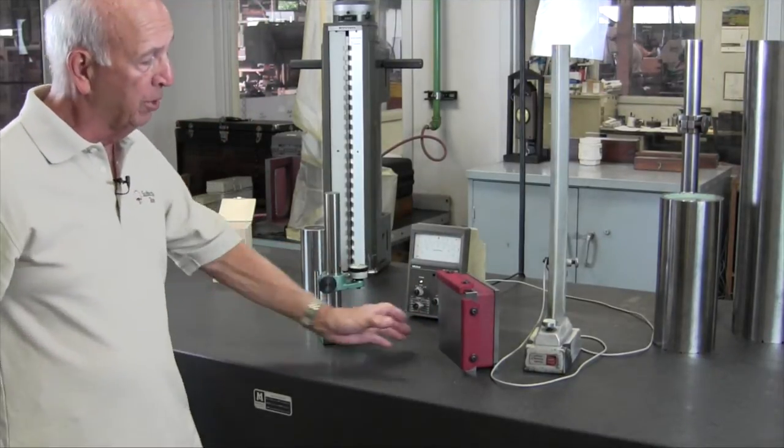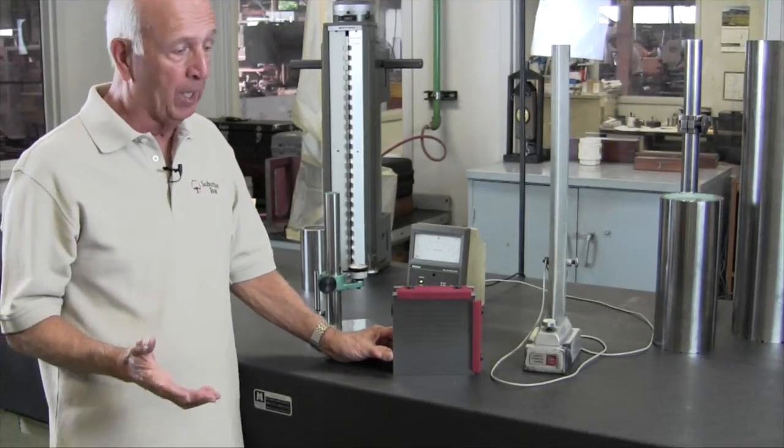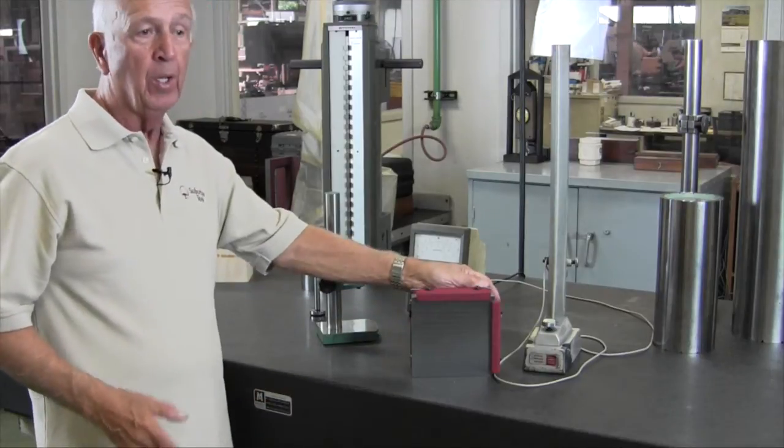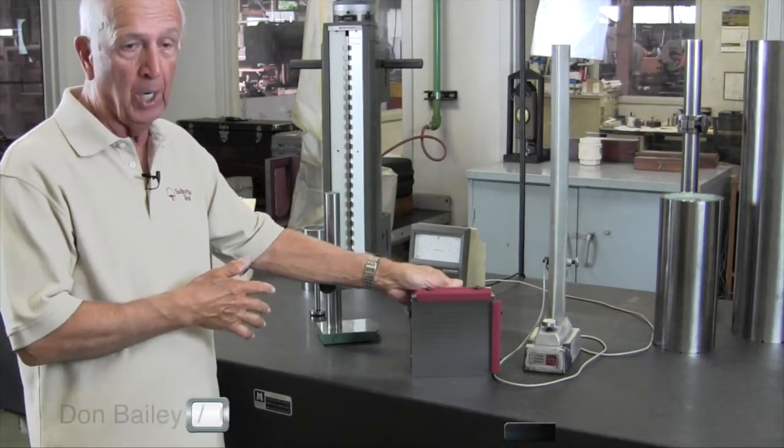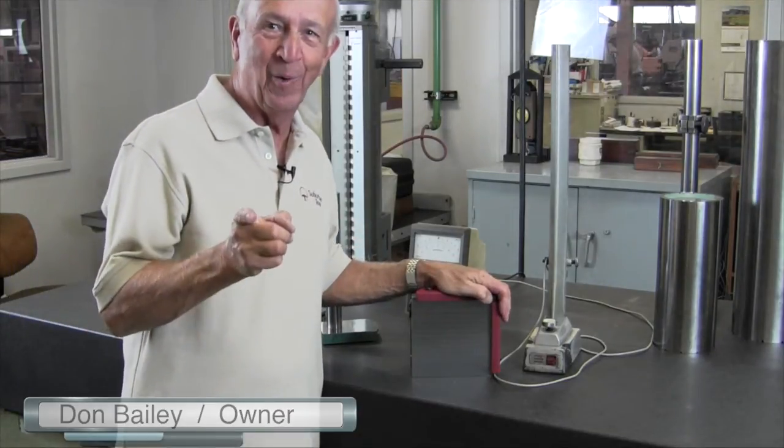This is a tool that you can use on the surface grinder or for inspection to make sure that the part that you're checking is square and parallel. It's a great tool for that purpose. You don't have to use clamps, turn the chuck on, turn the chuck off. Just another one of our tips of the trade. Thanks for watching.